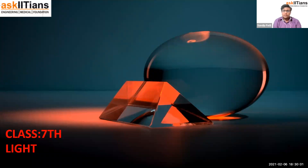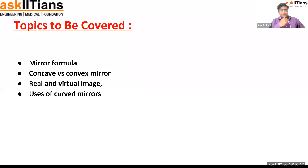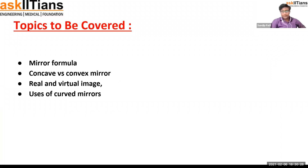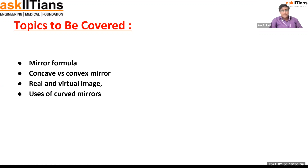We need those types of mirrors which are going to change shapes and size. So let's see what we are going to cover in this chapter. First, the mirror formula, then we have concave and convex mirrors — these are the mirrors we are going to use to change size or shape. Then, what are real and virtual images, and what are the different uses of curved mirrors.